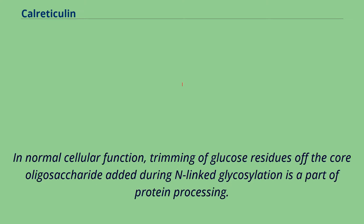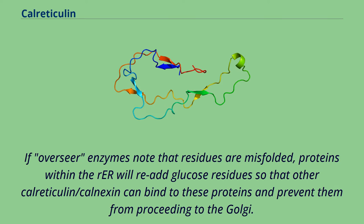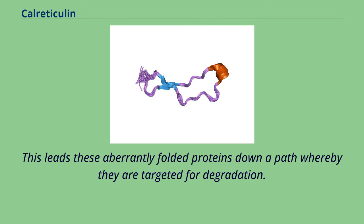In normal cellular function, trimming of glucose residues off the core oligosaccharide added during N-linked glycosylation is a part of protein processing. If overseer enzymes note that residues are misfolded, proteins will re-add glucose residues so that calreticulin or calnexin can bind to these proteins and prevent them from proceeding to the Golgi. This leads these apparently misfolded proteins down a path whereby they are targeted for degradation.